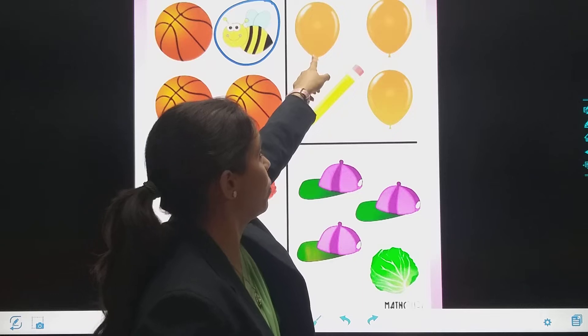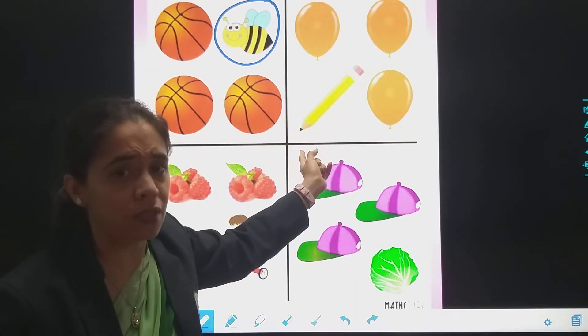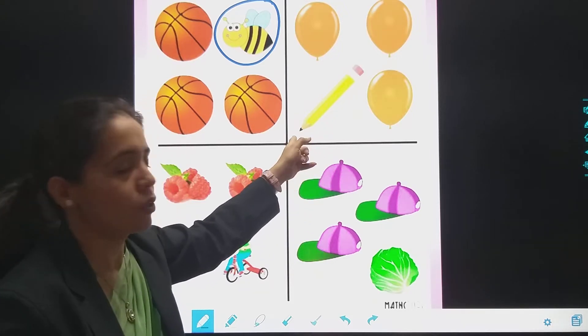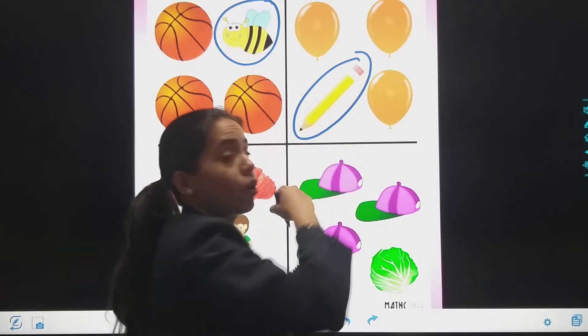Then balloons. One, two, three. Three balloons hai. This is not a balloon. This is pencil. Toh main isko circle darungi. So this is odd one. That is different.